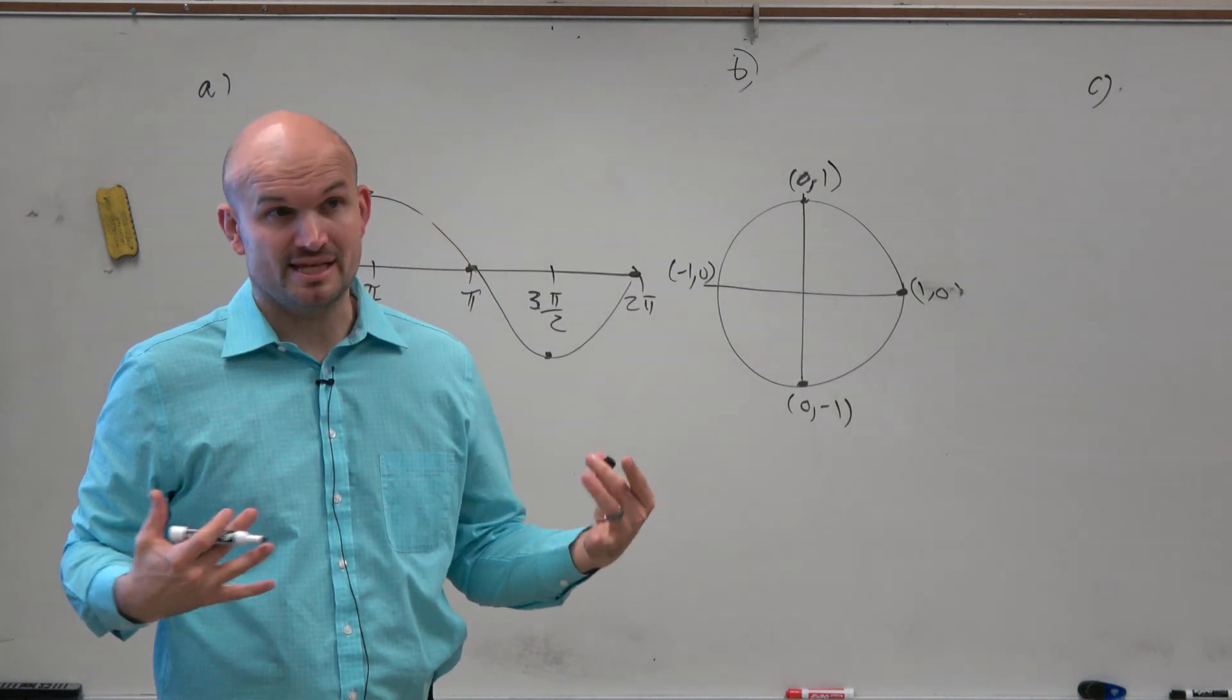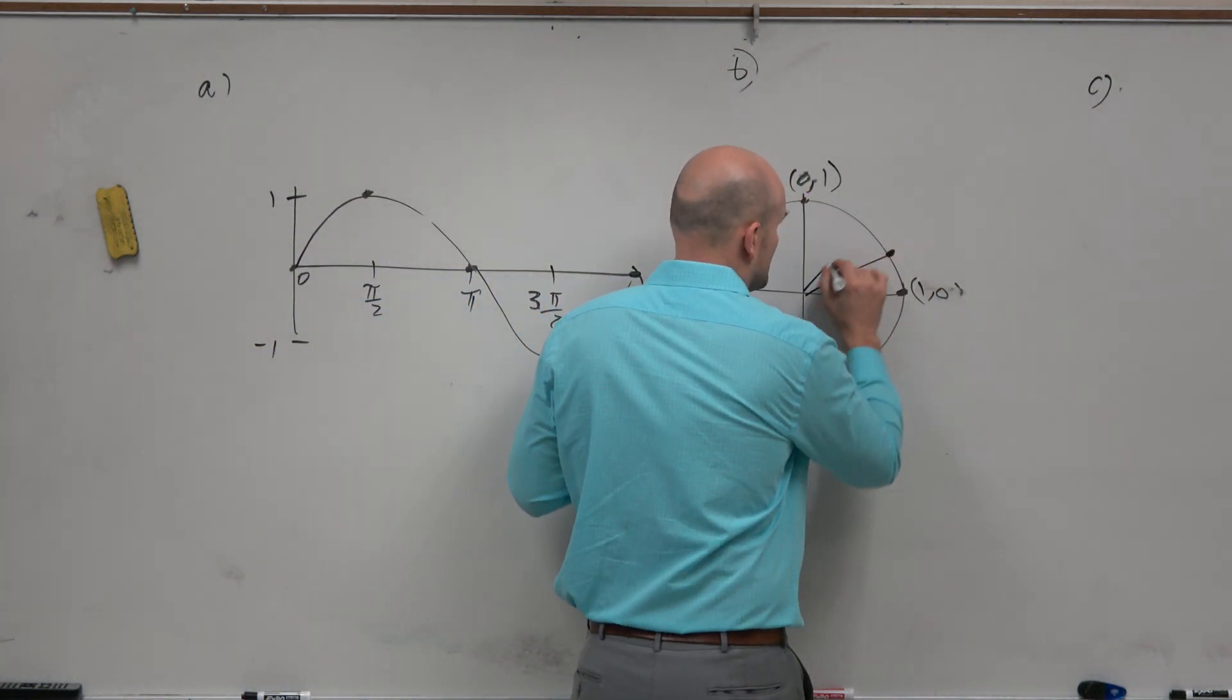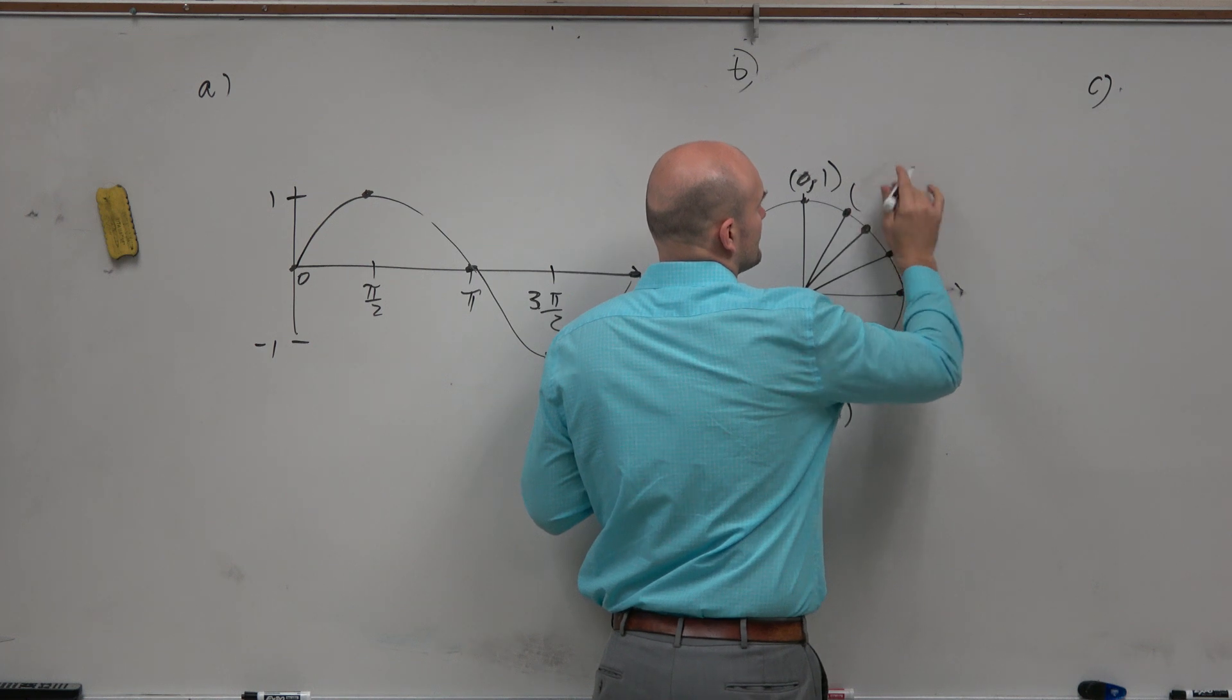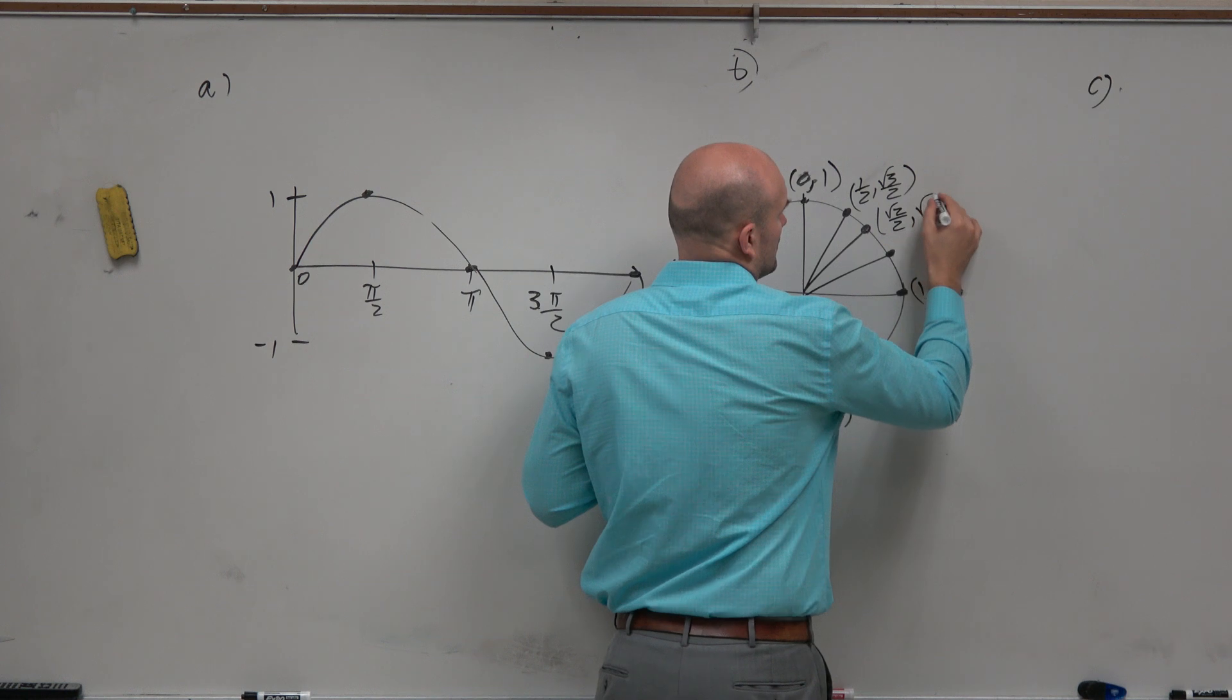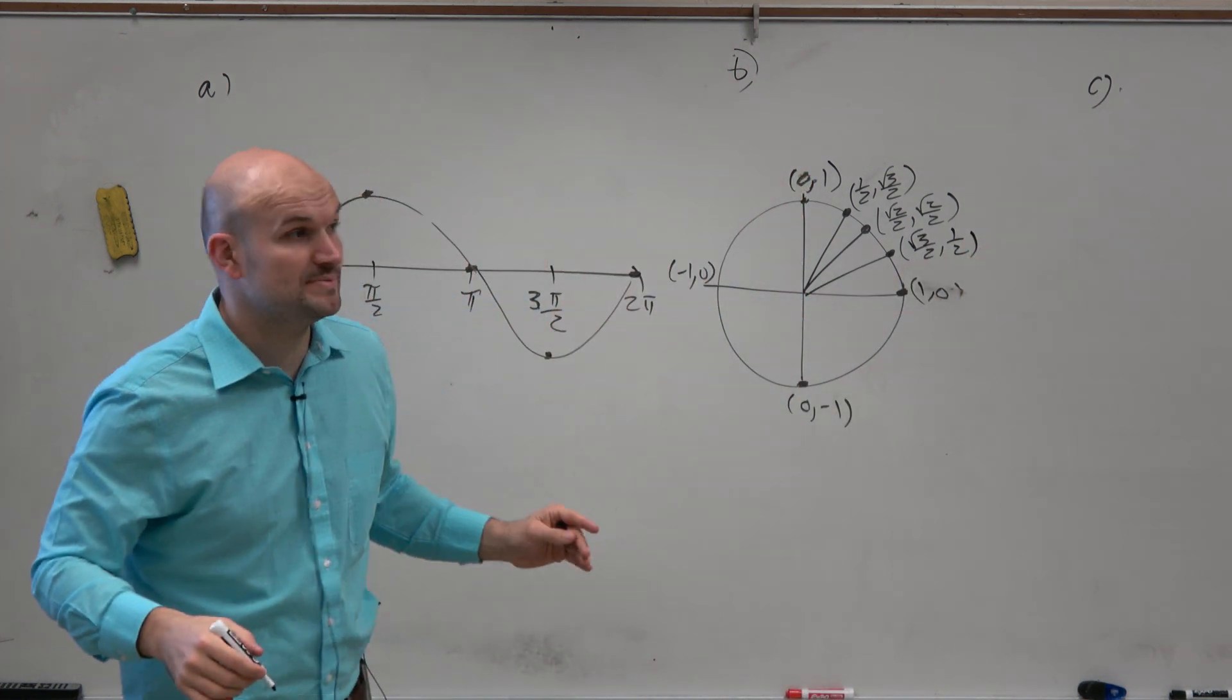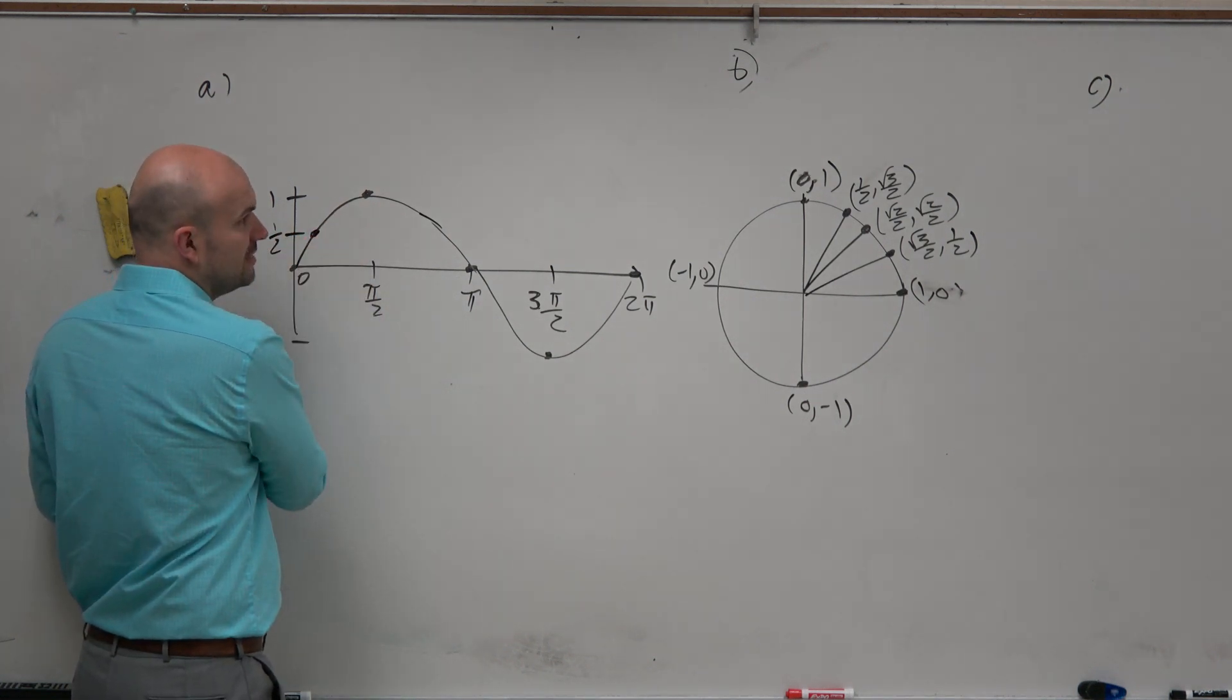But when you guys were first learning this, I did not expect you to come to that conclusion. So what I did is I said, you know what, let's practice finding more points: pi over 6, pi over 4, and pi over 3. So I'm not going to write the x-coordinate. Actually, I will. So what we did, or what you guys had to do, square root of 3 over 2, was we did all of the points between 0 and 2 pi.